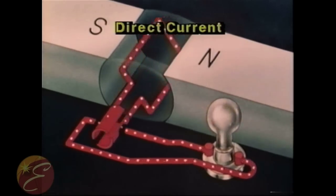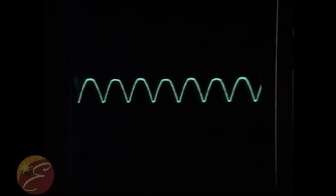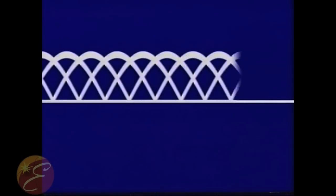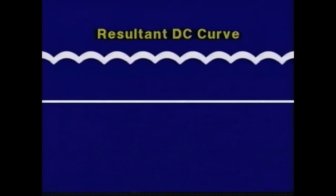But there is a problem. The direct current produced by a single coil is pulsating and unsuitable for most applications. Therefore, practical generators have many coils and many commutator segments that can produce a voltage that pulsates very little and is usable.